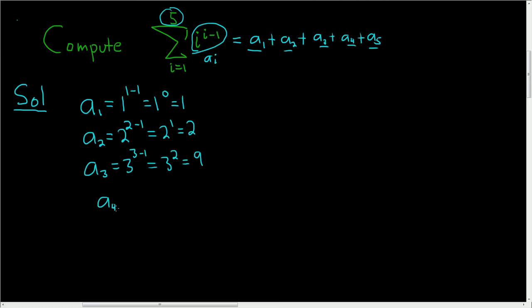a sub 4 is 4 to the 4 minus 1, so you get 4 cubed, which is 64. And finally a sub 5 is 5 to the 5 minus 1, which is 5 to the 4th, which is 625.